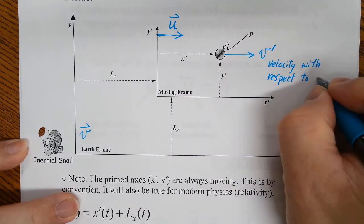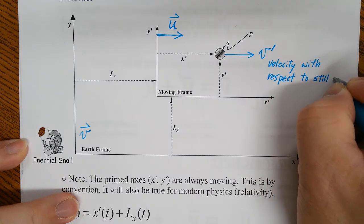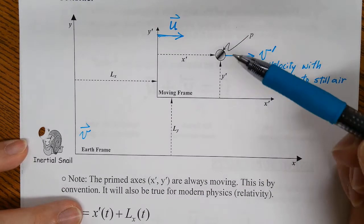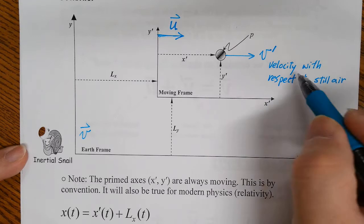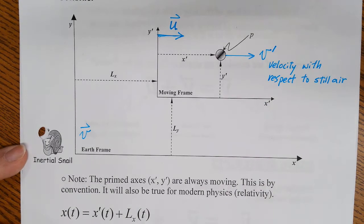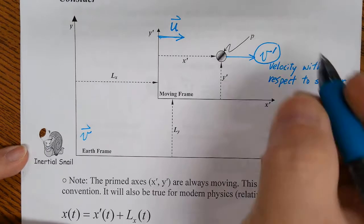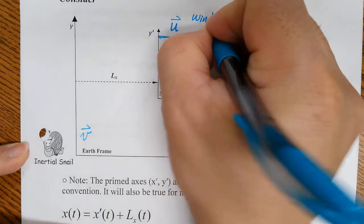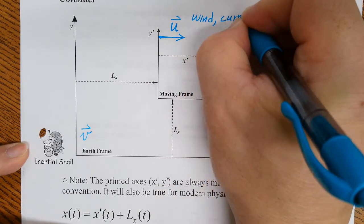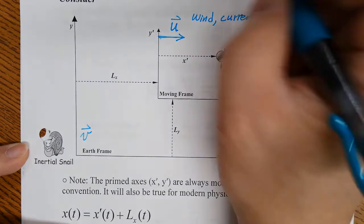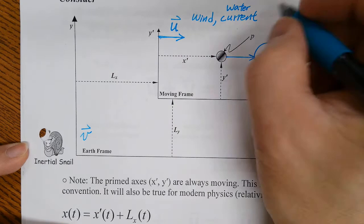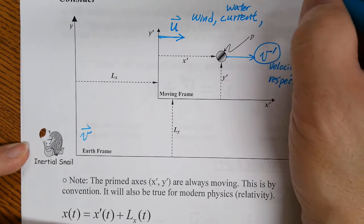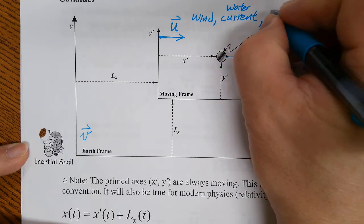Let's say there's no wind at all and we fly the airplane in a windless sky — that's velocity with respect to still air, and that's what v prime is. U is basically wind, or current of the water. You could think of it as stream, river, oceanic current, or like ground moving.